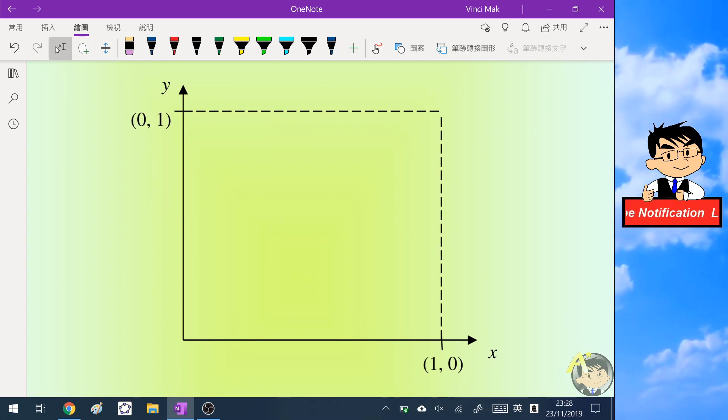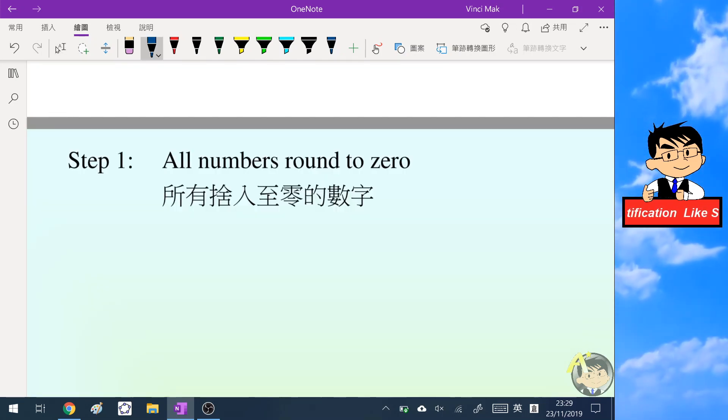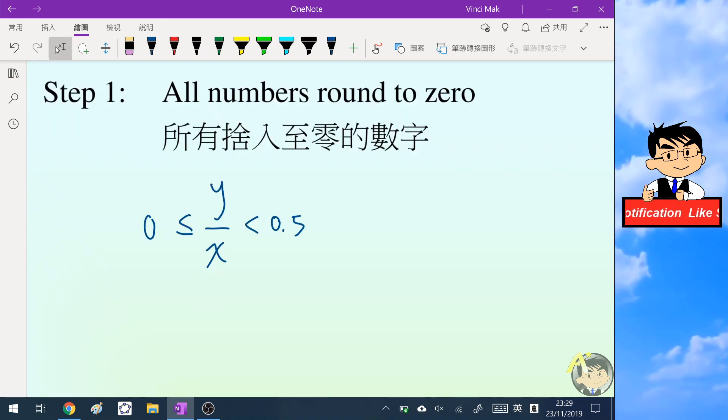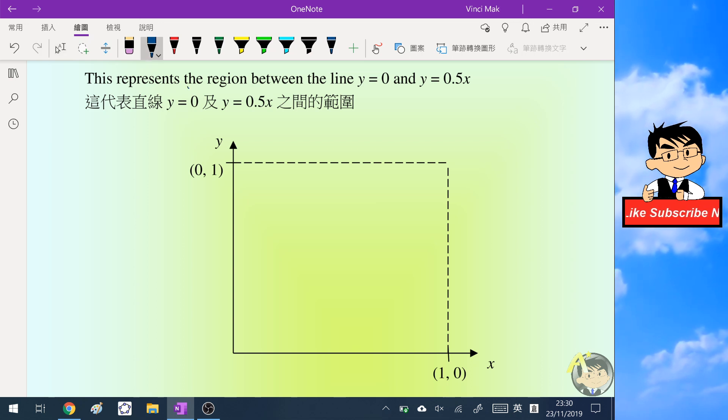Step one: we will consider all numbers that round to 0 first. If we would like a number to round to 0, because 0 is an even number, we will consider the range of this number to be greater than or equal to 0 and also less than 0.5. We will multiply the inequality by x on all three sides, so the left becomes 0, the middle is y, and the right hand side becomes 0.5x.